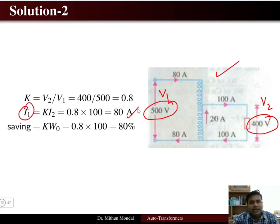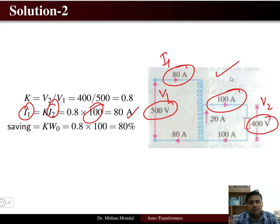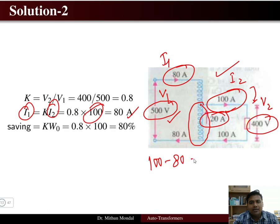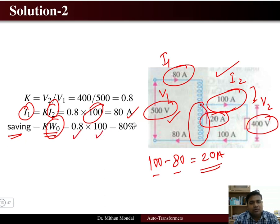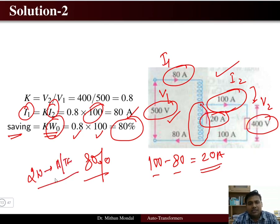The primary current is 80 ampere and the secondary current through the load is 100 ampere. The common winding carries a current of 100 - 80 = 20 ampere. The copper saving formula gives k × 100% = 0.8 × 100 = 80 percent. So 80 percent copper can be saved when a two winding transformer is converted to an auto transformer.